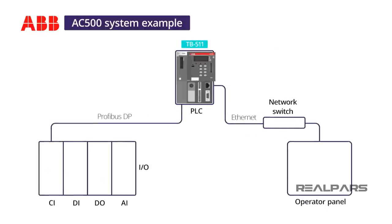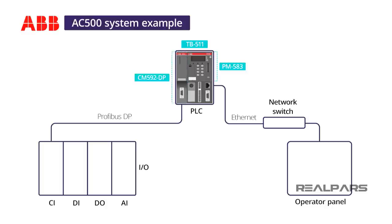I choose a TB511 terminal base to support the CPU's Ethernet port and to provide one additional communication card slot for a Profibus DP communication card. I select a CM592DP Profibus DP Master communication card to fit next to the CPU in the terminal base. This Profibus interface has a standard 9-pin Profibus connector and supports baud rates from 9.6 kilobits per second to 12 megabits per second.